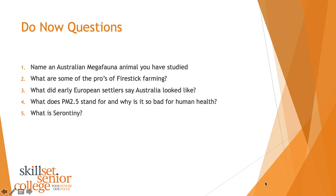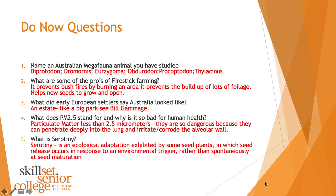Okay, if you want to write these down, pause now and I'll quickly go over the answers. Some of the answers you could have had for Australian megafauna were Diprotodon, Genyornis, Zygomaturus, Obdurodon, Procoptodon, and Thylacinus — try saying a few of those fast, that's impossible. Those are the Latin names for these megafauna.